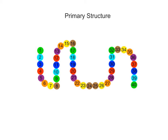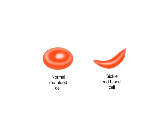Any errors or mutations in the DNA sequence can result in changes to the protein's amino acid sequence, which may alter the protein's overall shape and function. An example of this is sickle cell disease, a genetic disease in which deformed hemoglobin proteins twist and curve red blood cells into a sickle or crescent shape. This greatly limits the ability of red blood cells to transport oxygen and move through microscopic blood capillaries.